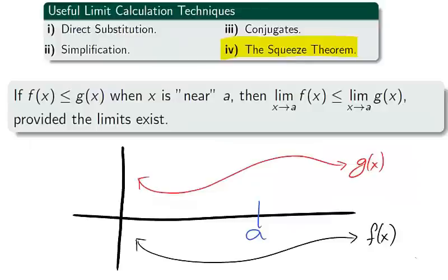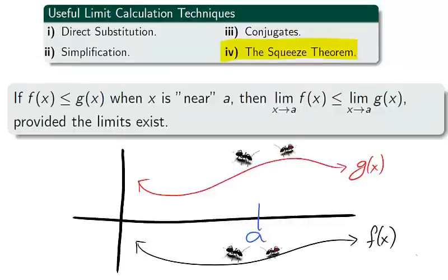Our final technique is known by many names. We will call it the squeeze theorem, but it is also called the sandwich theorem or the pinch theorem. The squeeze theorem is a consequence of the observation that if one function g, colored in red, is larger than the function f, colored in black, then the limit of g is larger than the limit of f as x approaches a, provided the limit exists, of course.